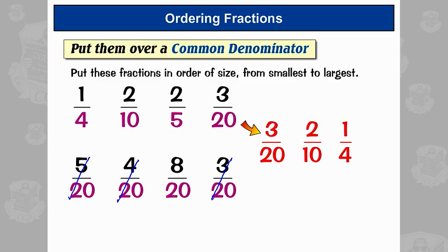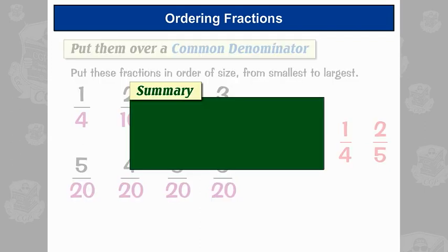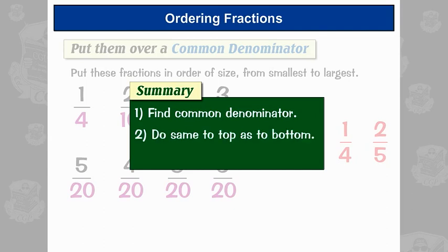A quick summary for ordering fractions: first, find a common denominator. Then for each fraction, do the same to the top as to the bottom. Finally, order the fractions by the size of the numerators of the new fractions. Ordering fractions — a bit of a palaver, but not too bad really.